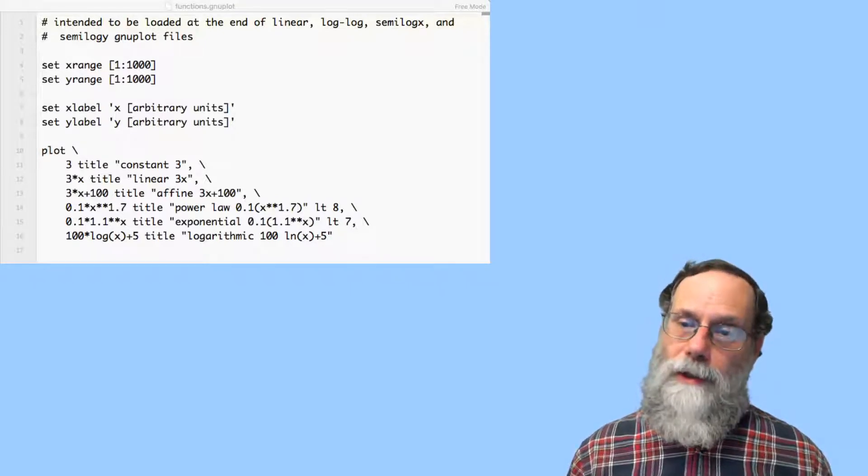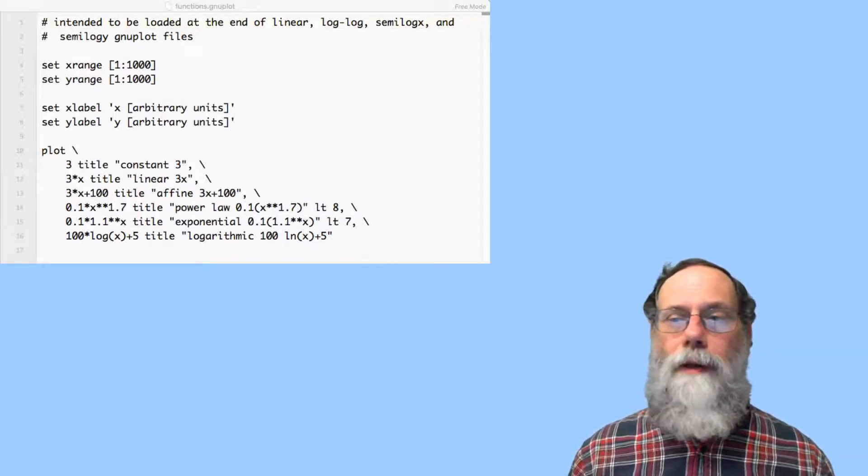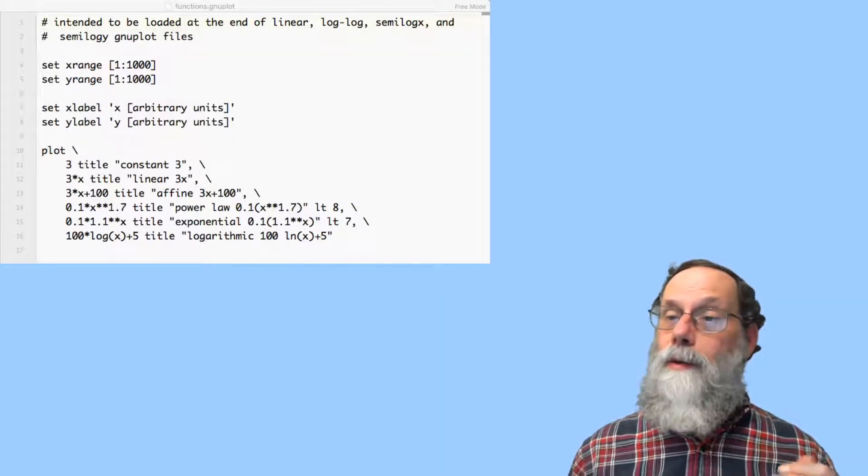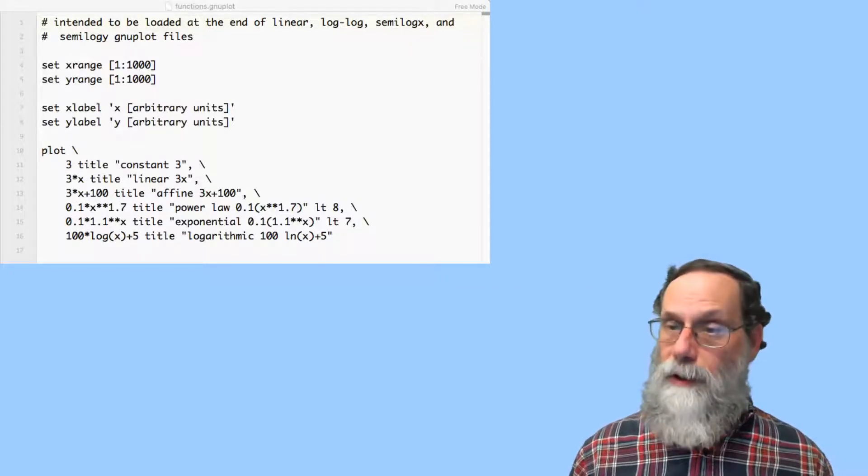The next one is a linear function. A linear function is one that goes through 0,0 and is a straight line. So 3x, 5x, 10x, those are all linear functions.